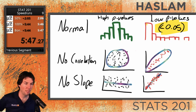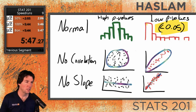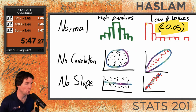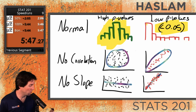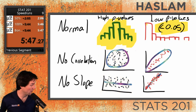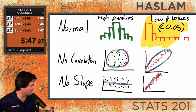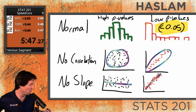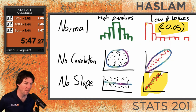Fail to reject the null on the left, and reject on the right. The left ones have higher p-values, telling you that result is likely. You would say I failed to reject the null because that looks normal, so you continue to believe it is normal. If you fail to reject the null, you continue to believe there's no correlation, or no slope. If you reject the null, you're saying I have evidence it's not normal, I have evidence there's correlation, or I have evidence there is a slope.